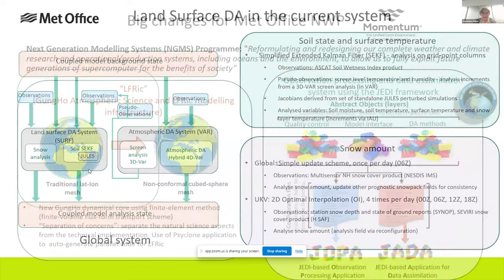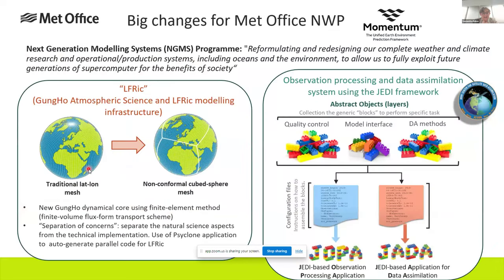The time is right to rethink our land surface DA, because there are big changes going on at the Met Office for NWP. We're in the midst of a massive program to redesign our complete weather and climate systems to equip us for future generations of supercomputer. The resulting framework will be called MOMENTUM. Two key elements of this for NWP are a new numerical model known as ELFRIC, and a new JEDI-based observation processing and DA system.